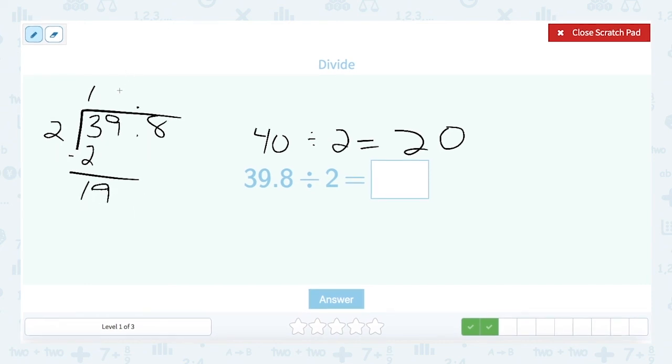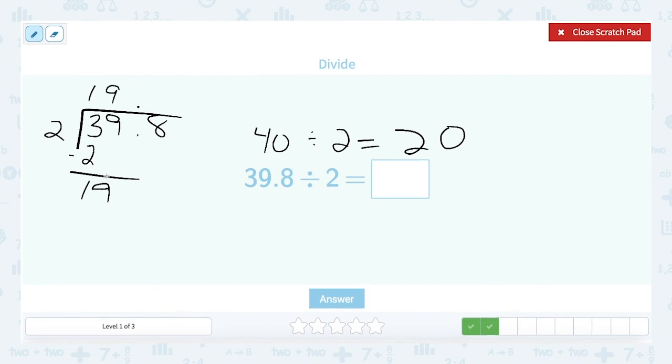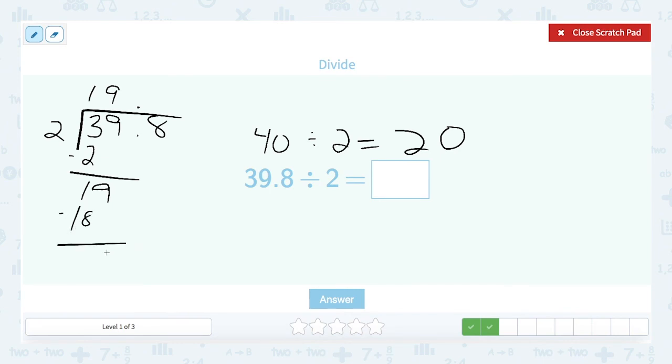9 times 2 is 18. And I go ahead and subtract there, I get 1 and I bring down my 8. 2 goes into 18 nine times and it goes in there evenly because 9 times 2 is 18. When I subtract that leaves me with 0.